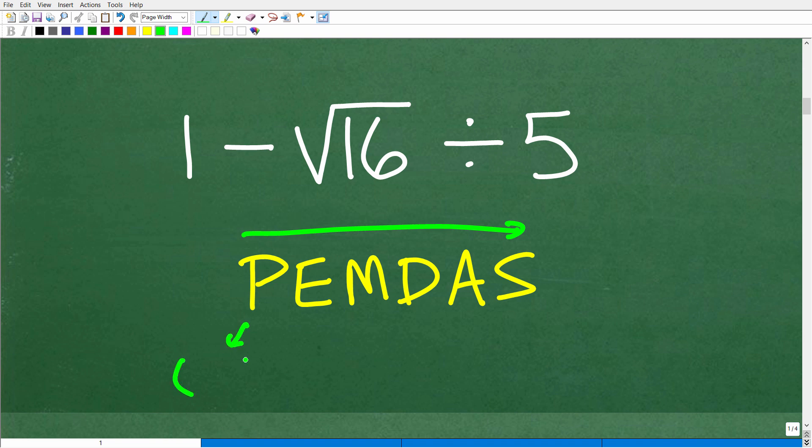So, P stands for parentheses. So, if you have any parentheses in your problem, you're going to do these first. It could also be brackets like this. So, we're really talking about grouping symbols. So, that's what P is. Now, of course, in this problem, we don't have any parentheses, so we don't have to worry about it.